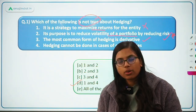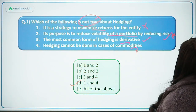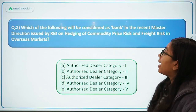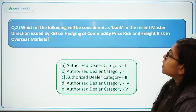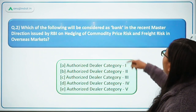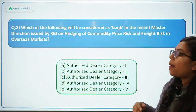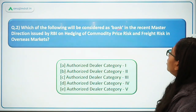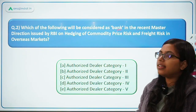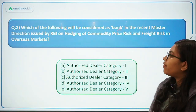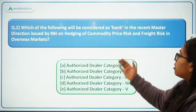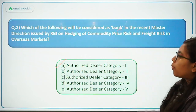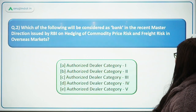Question 2: Which of the following will be considered as a bank in the recent master direction issued by RBI on hedging of commodity price risk and freight risk in overseas market? The answer is authorized dealer category 1 — so option A is the correct answer.